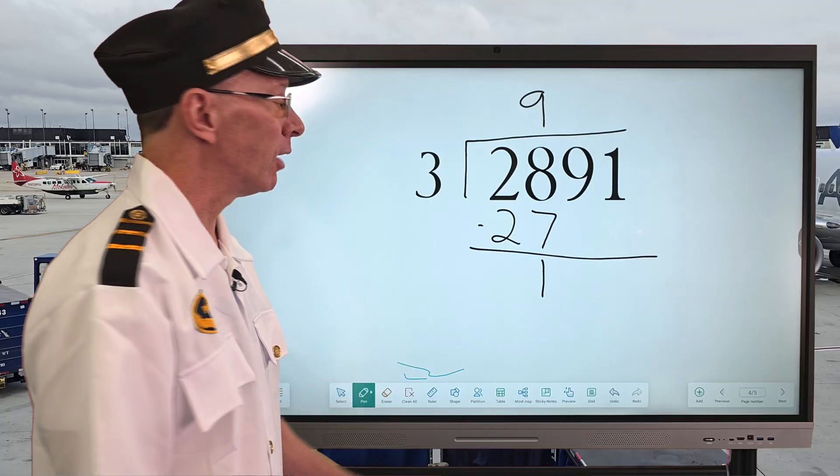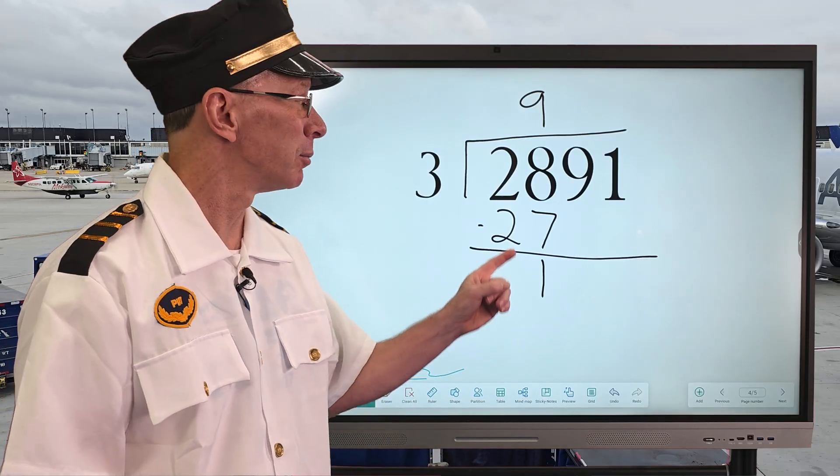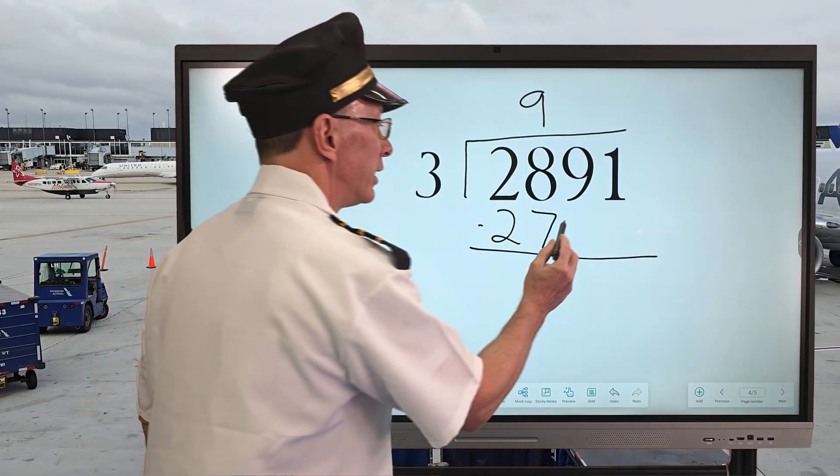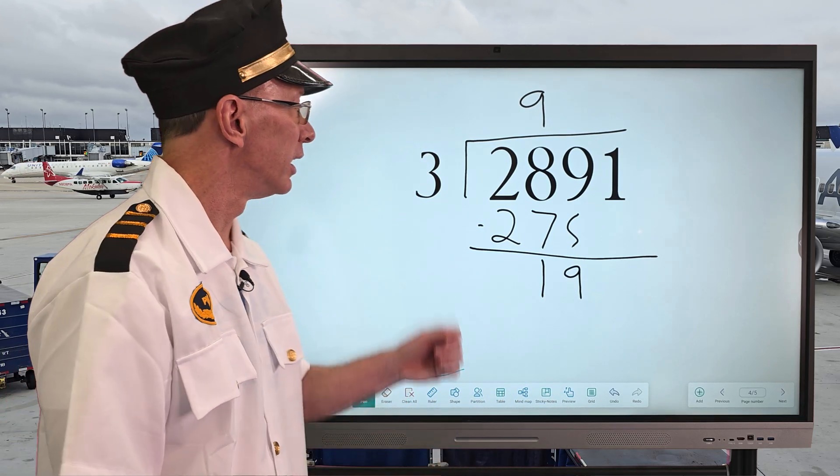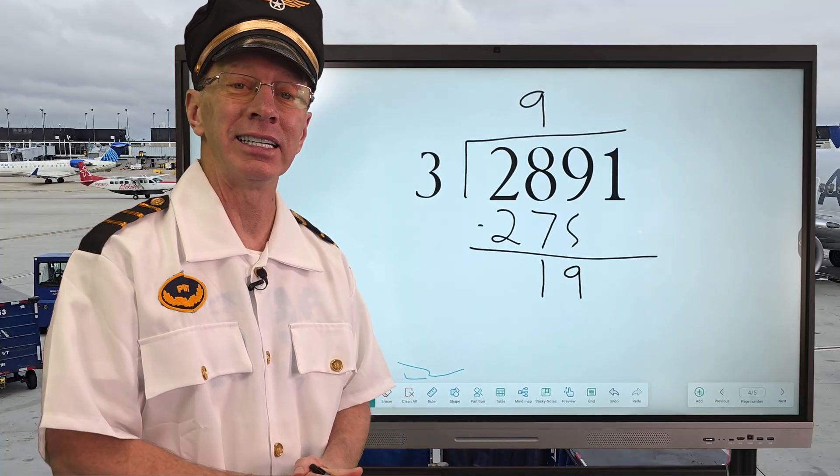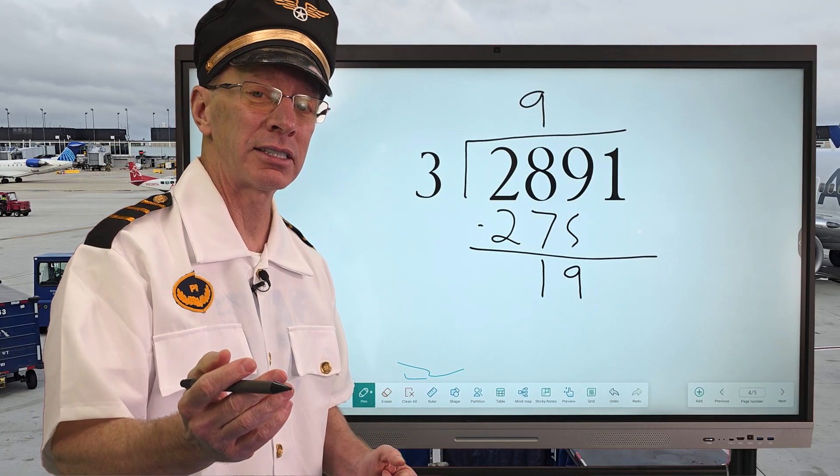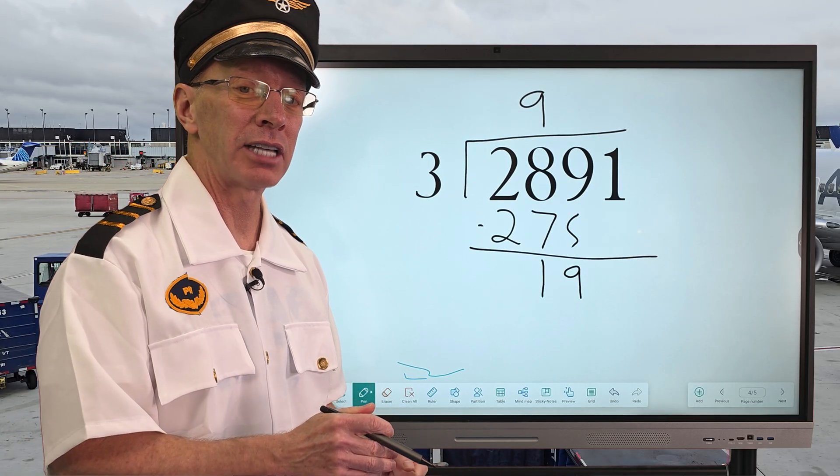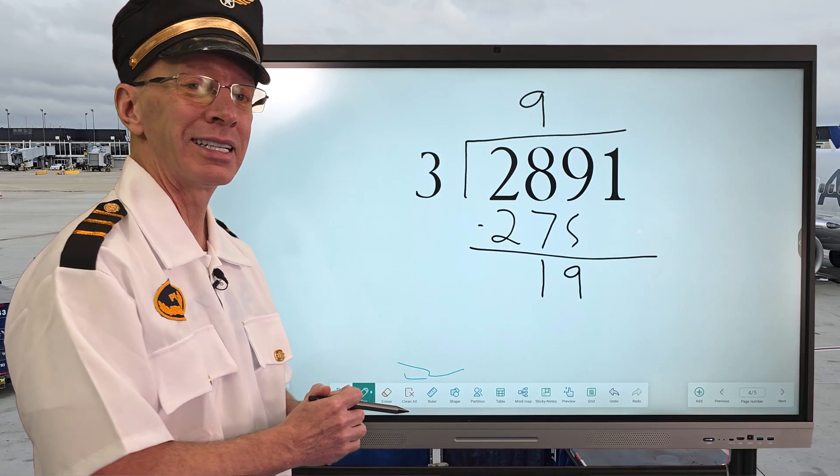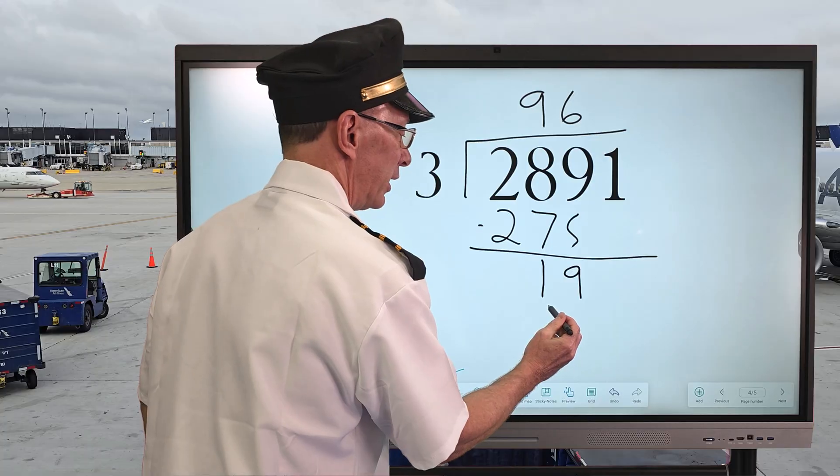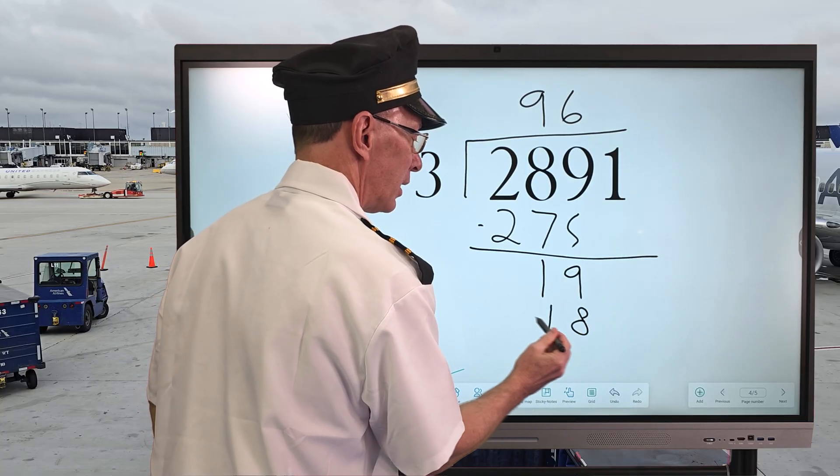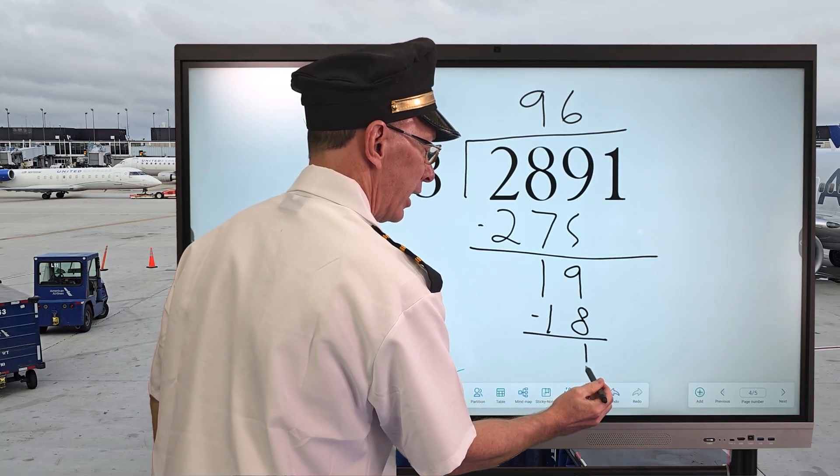So I go ahead and put 1 right here. And now what I'm going to do is I'm going to bring the next number down. I'll bring 9 all the way down here and then put it right there. And then we start the whole process over. How many times can I put 3 into 19? Well, 3 times 6 is 18, 3 times 7 is 21. So I'm going to use 6 right here. I'll go ahead and put 6. 6 times 3 is 18. Subtract, and then I have 1.